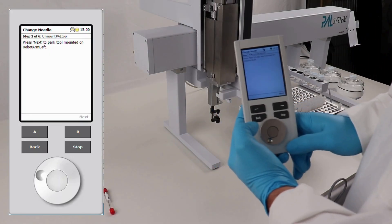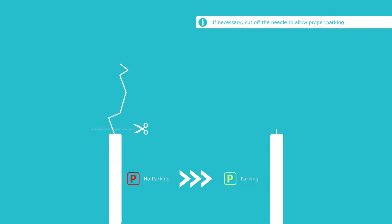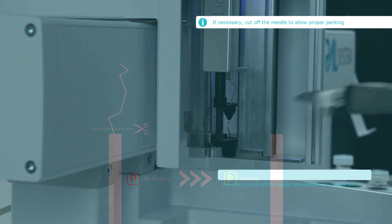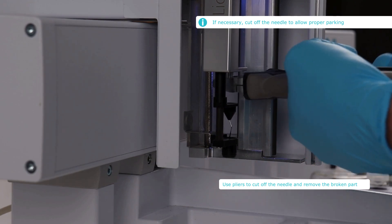Start by navigating to the workflow change needle on the terminal. If you cannot park the tool due to a broken needle, cut it off using pliers and remove the needle.